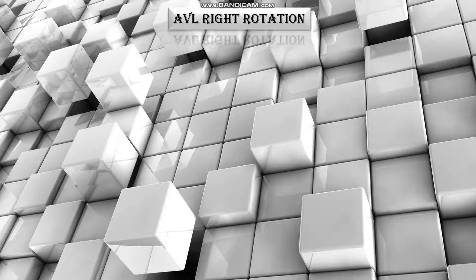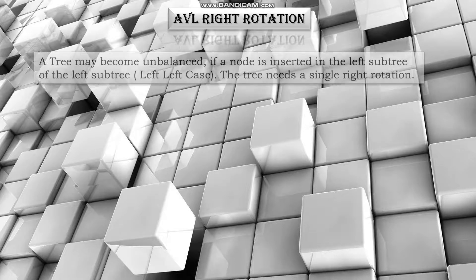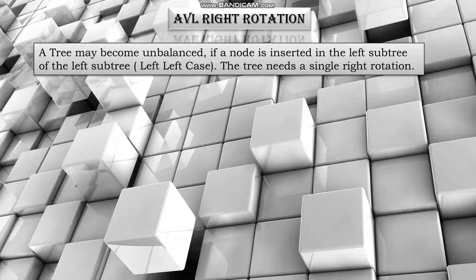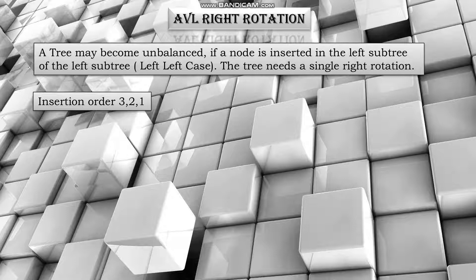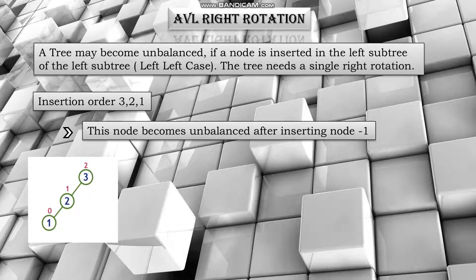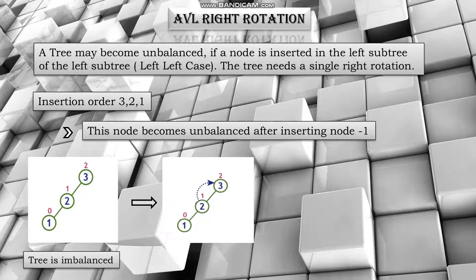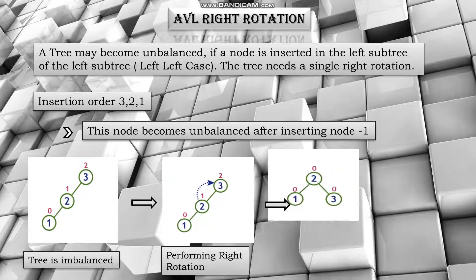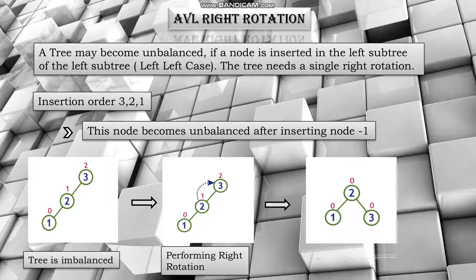AVL right rotation: a tree may become unbalanced if a node is inserted in the left subtree of the left subtree — i.e., the left-left case. The tree needs a single right rotation. For example, the insertion order is 3, 2, 1. First we insert 3 as the root node, then 2 as the left subtree of 3. The tree is still balanced. The node becomes unbalanced after inserting node 1, because the balance factor of 3 is 2. So we perform a right rotation — 3 becomes the right subtree of 2. Now the tree is balanced because the balance factor of each node is 0.